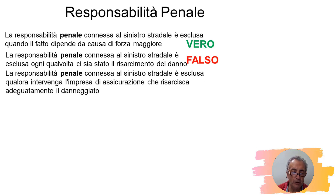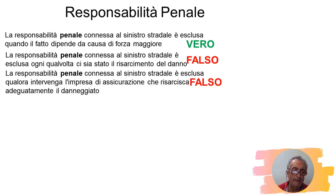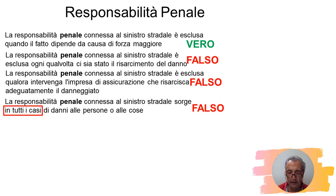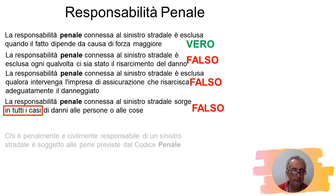La responsabilità penale esclusa quando intervenga l'impresa di assicurazione – no, l'assicurazione RCA paga il danno civile ma non esclude quella penale. La responsabilità penale sorge in tutti i casi di danni alle persone e alle cose – falso, non in tutti i casi: solo per danni gravi alle persone o la morte, non per danni alle sole cose.